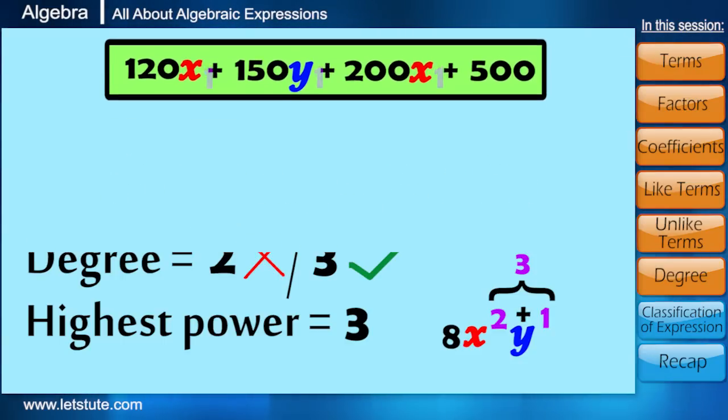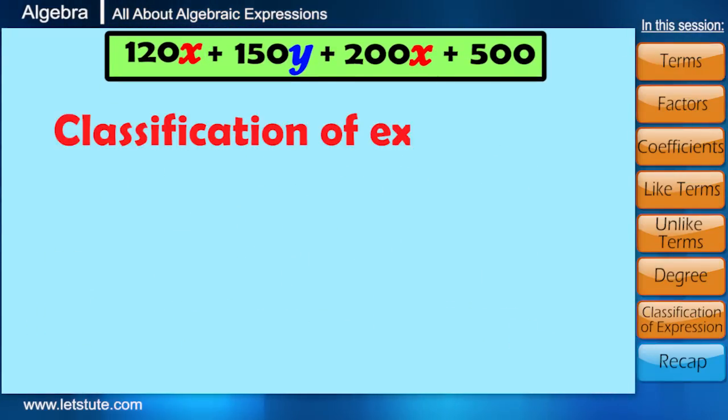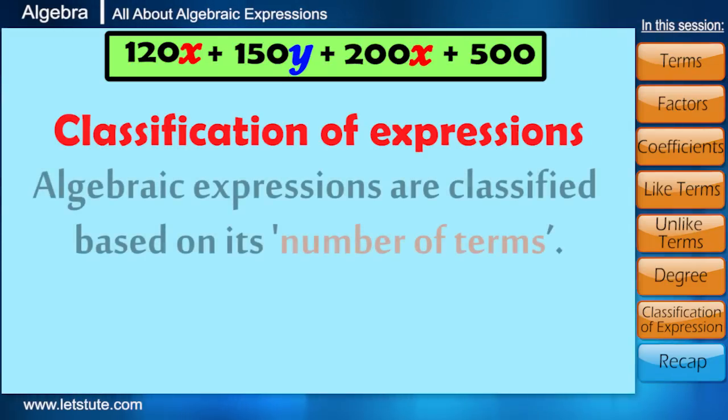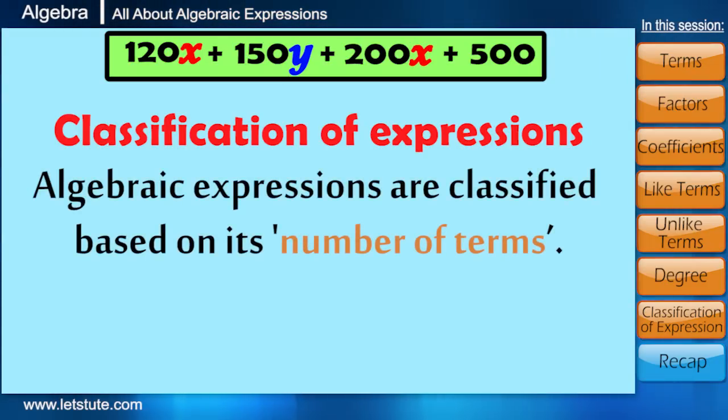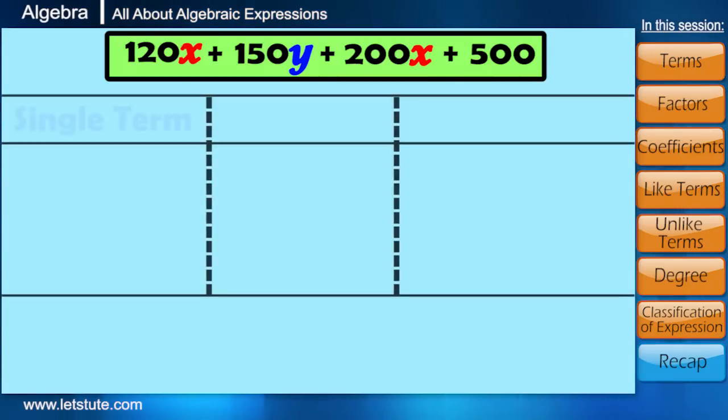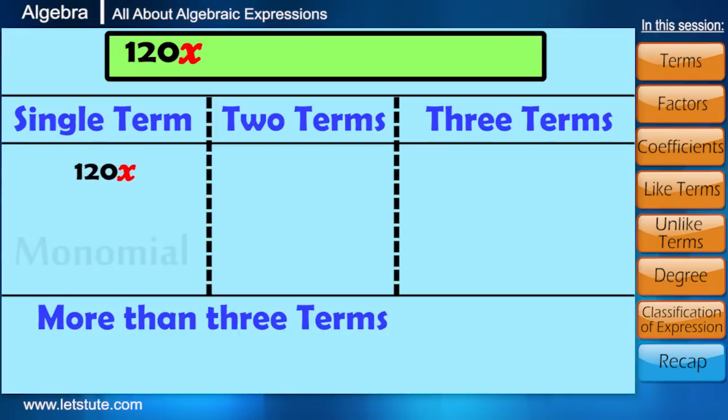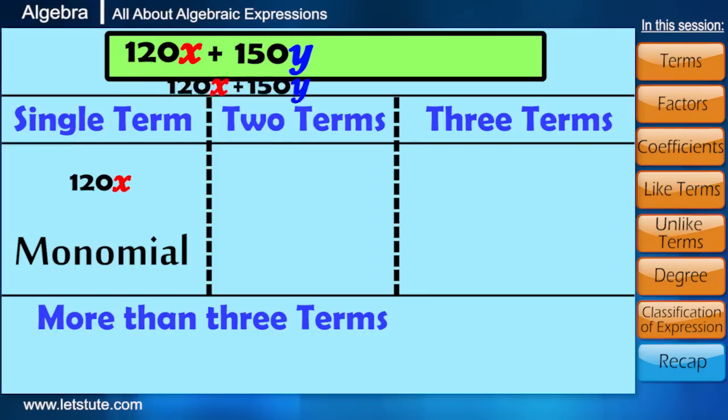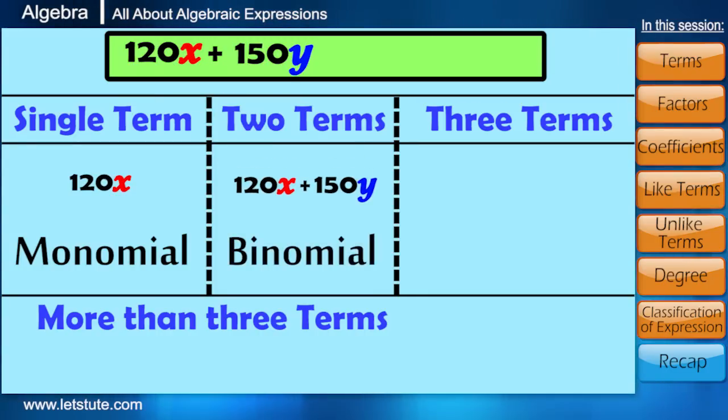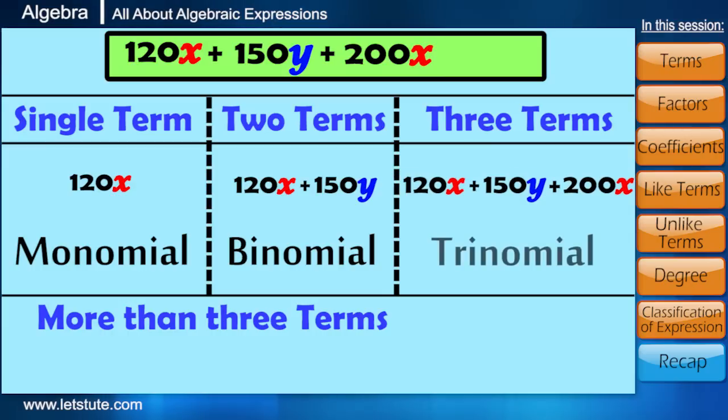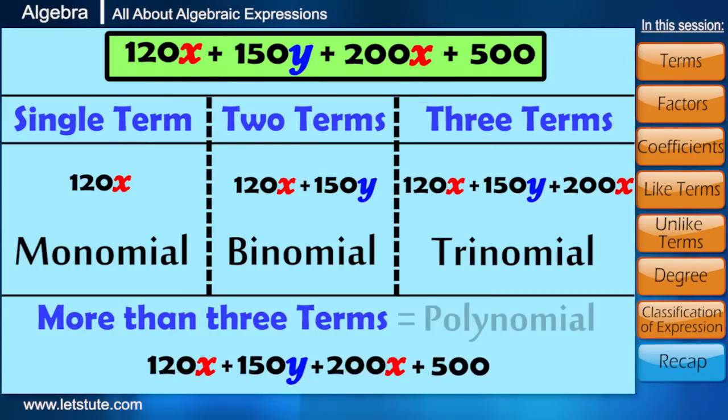Now, the last thing that we are going to understand is the classification of expressions. Friends, algebraic expressions are classified based on its number of terms. As we just studied, an expression can be of a single term, it can have two terms, three terms or simply it can be more than three terms. When we have one term, the expression is called monomial. When we have two terms, we call it as binomial. Expressions having three terms are called trinomials. And expressions more than three terms are simply called polynomials.